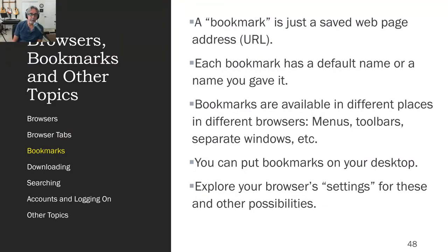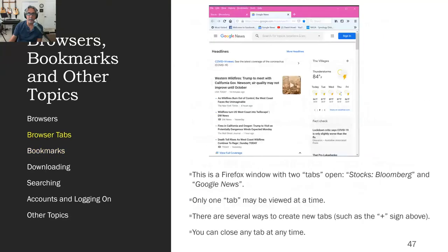A bookmark is a simple idea — it's just a saved web page address. It's just a URL. So I can have a bookmark for Amazon and other things. If I go back to the previous slide, you can see I have a bookmark for Facebook, one for Google News, one for my YouTube channel, and other things.